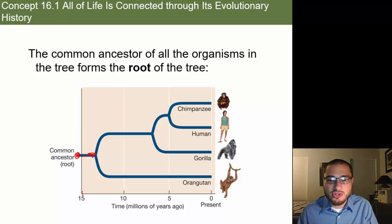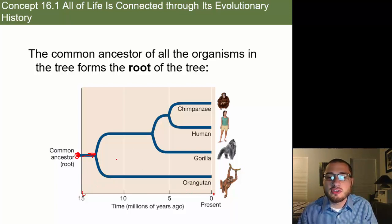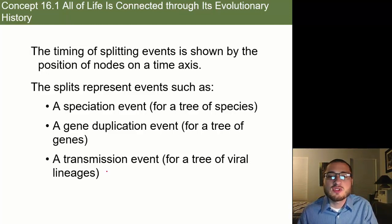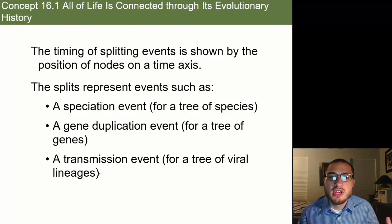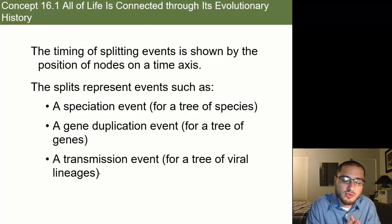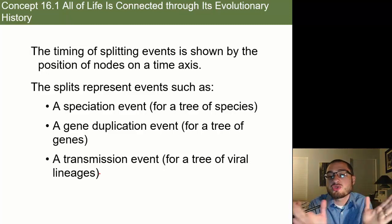Time is often shown at the bottom of the tree. Even if it doesn't show time explicitly, as you move along and there are more branches, you're moving closer to the present. The timing of splitting events is shown by the position of nodes on a time axis, and we can use this to create a timeline along with the branching tree. The splits represent events such as a speciation event, where one species split into two different species.